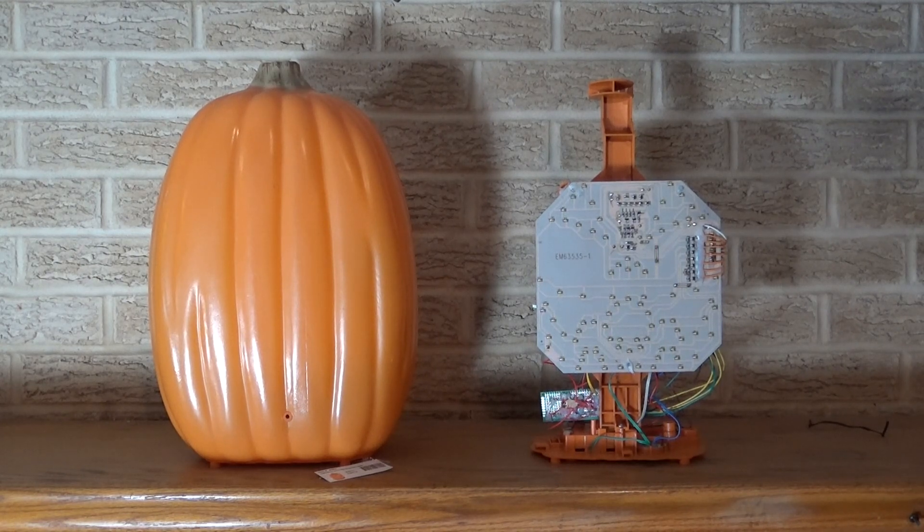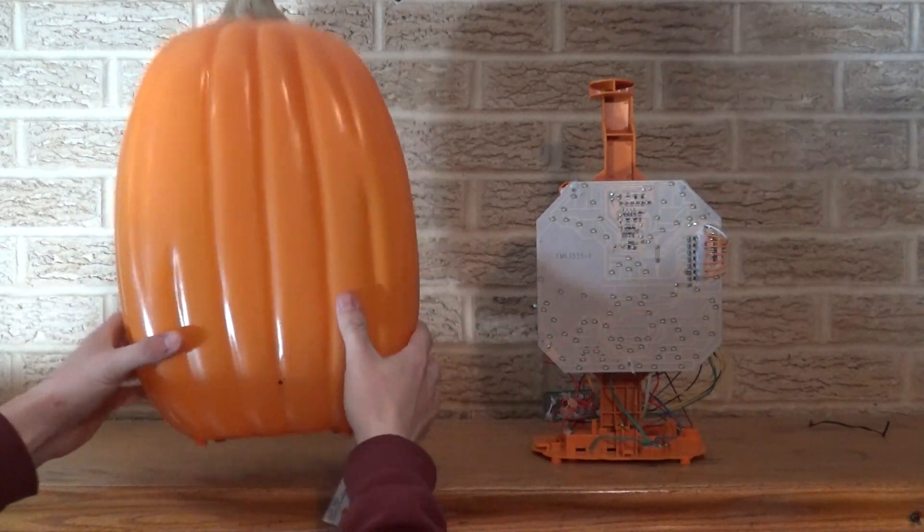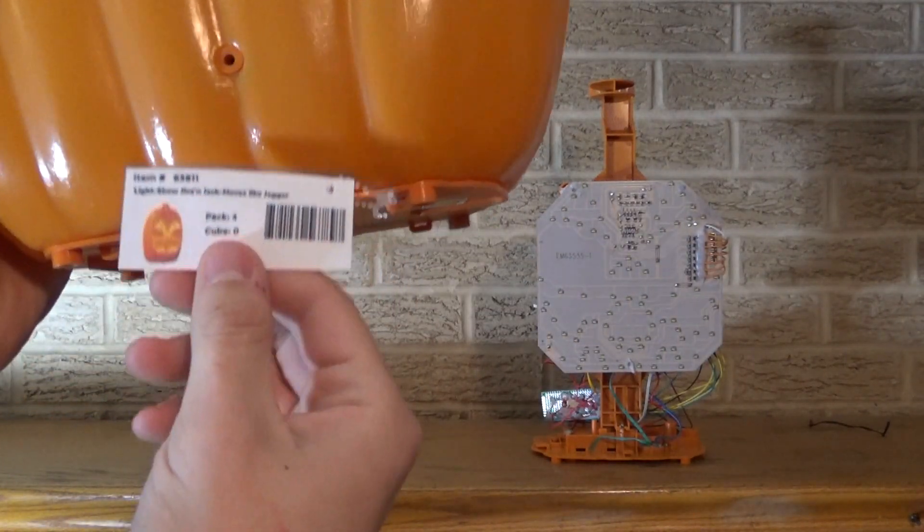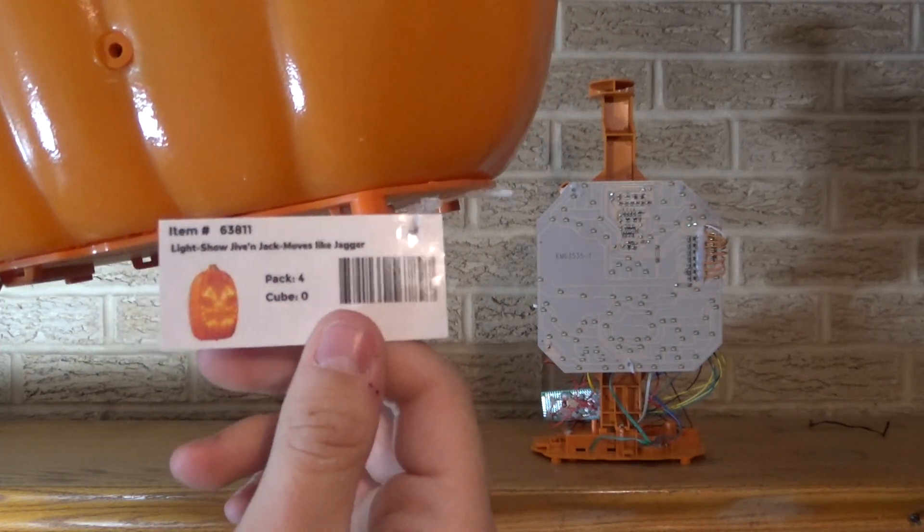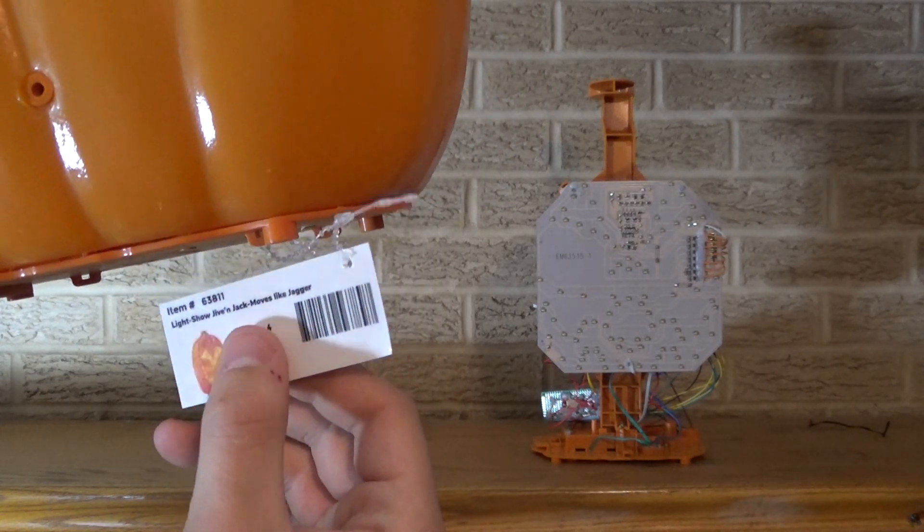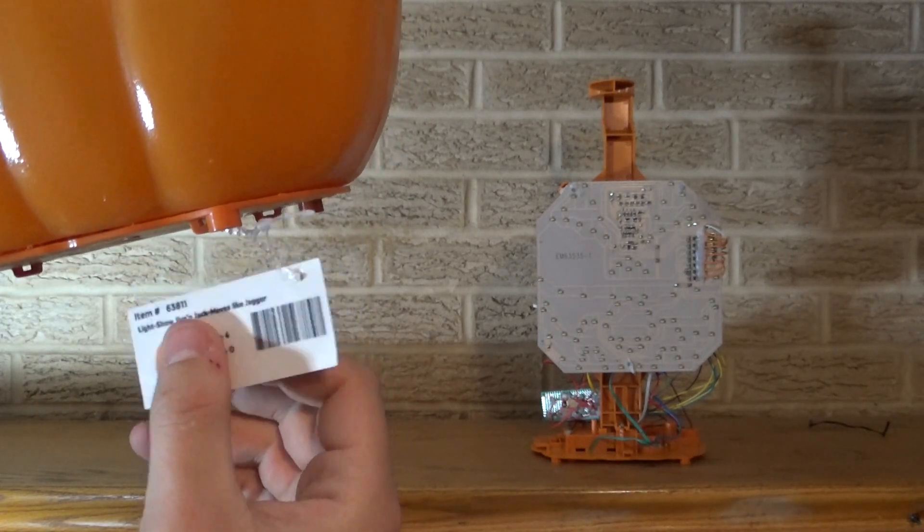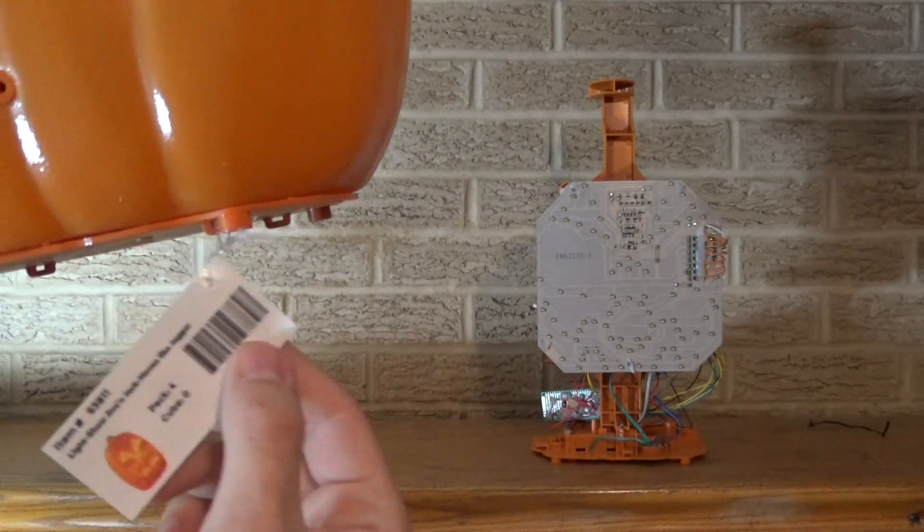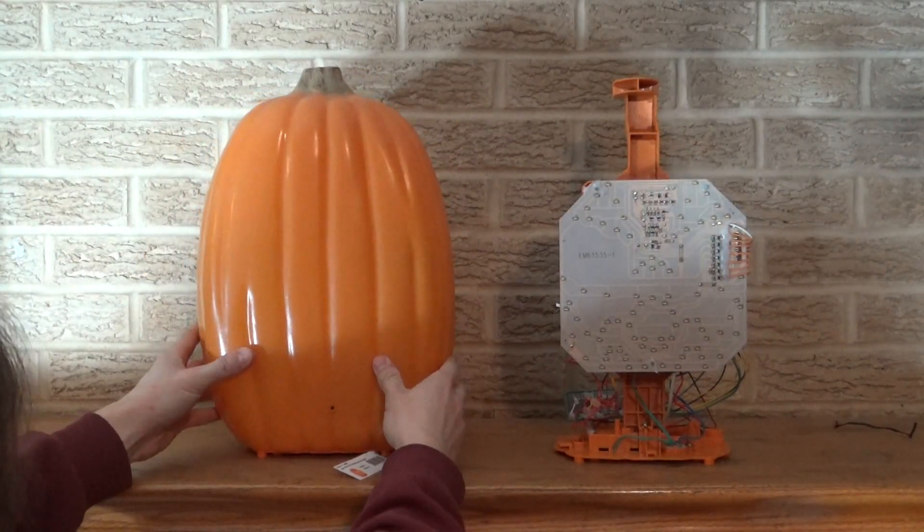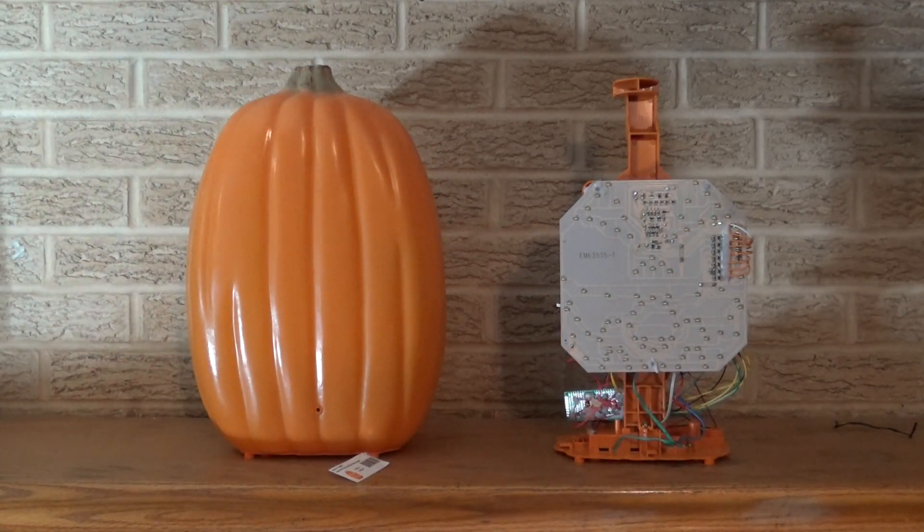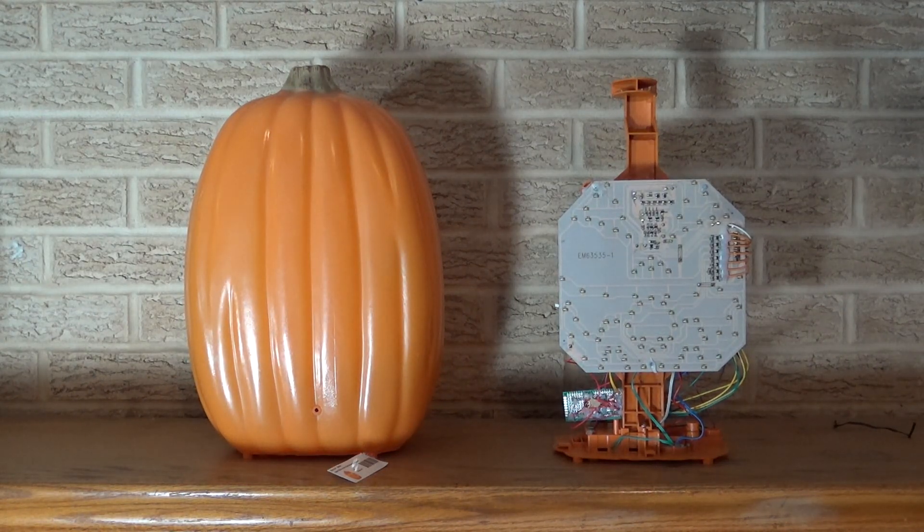So I do want to show the pumpkin that's already programmed right here. Well, they're both already programmed, but this one actually works. I actually made its own custom tag right here, and it is in the style of how the original one was. I think it's a little bit different. But it says Light Show, Jive and Jack, Moves Like Jagger, Pack 4, Cube 0, Item 63811. And it's got a barcode right there, which literally goes to nothing. It's not the original barcode that was on the original. It's just a barcode that I found online. Because again, it's all for looks. It's not a real prototype, but it's just there for looks.